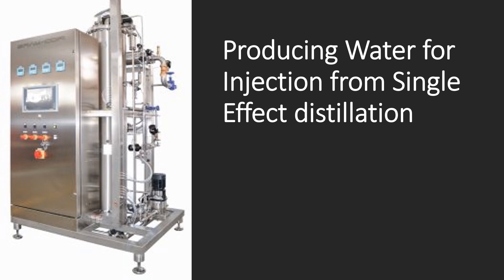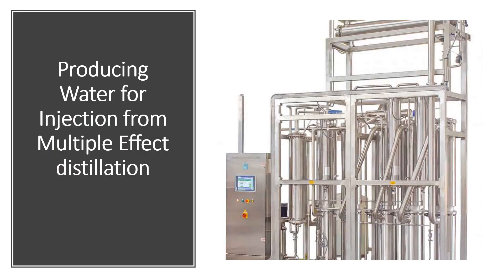You can see the unit for water for injection from single effect distillation — it is a simpler machine. This is the machine for multiple effect distillation: the columns are larger in number and vary in height. Steam is produced and condensed at different stages across the columns, and the condensed water is collected as water for injection.